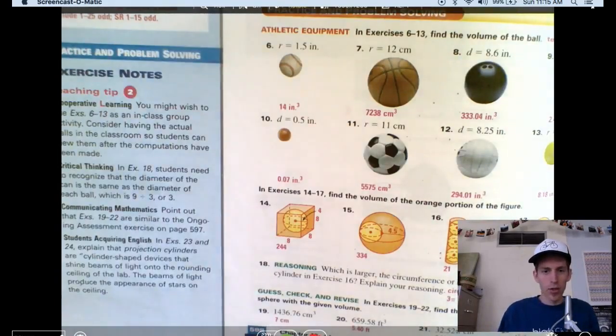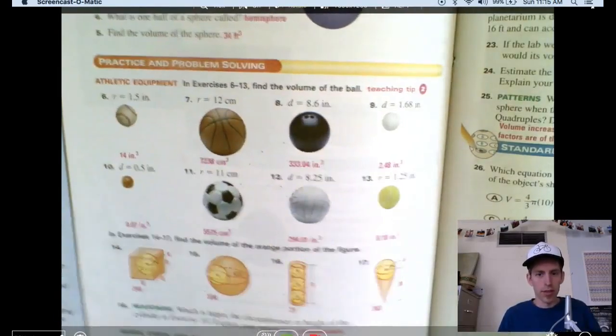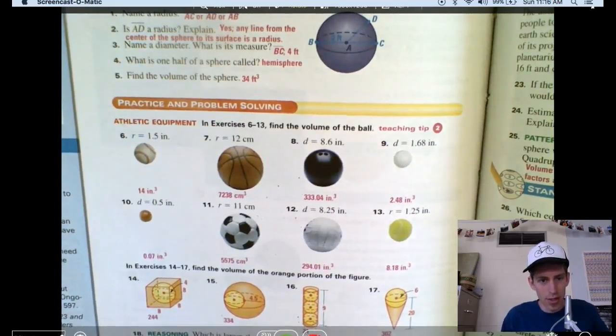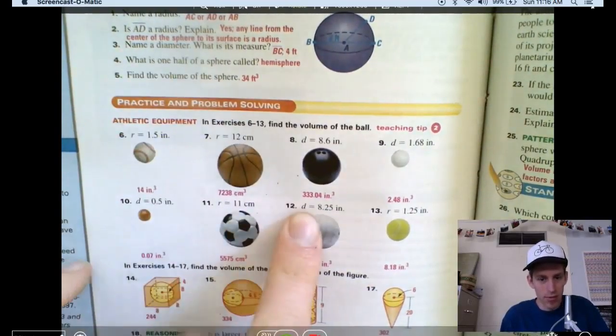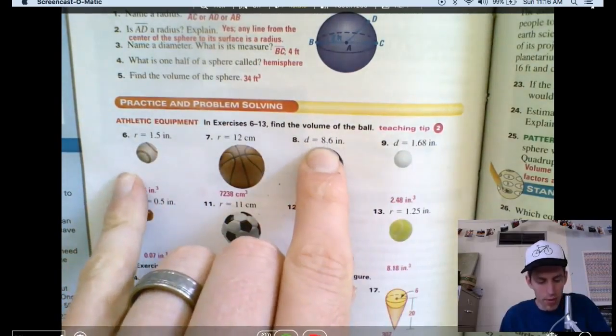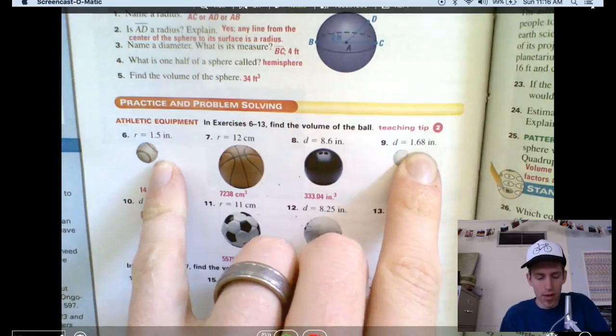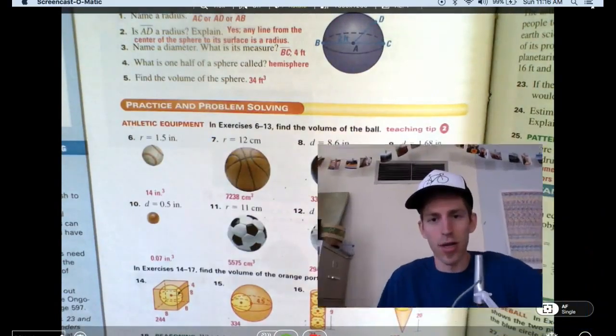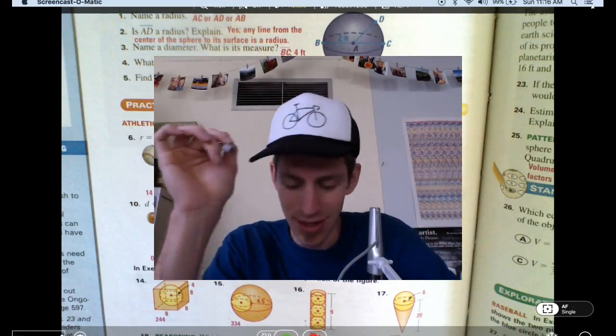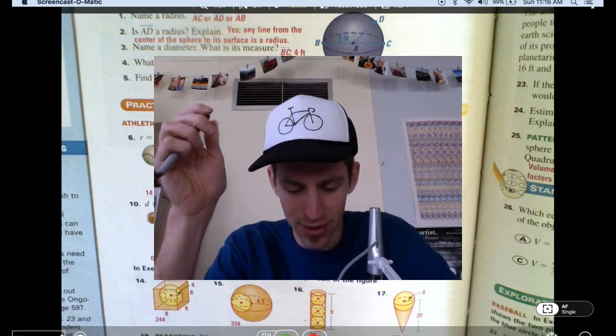Anyway, so I showed all that to you because it's interesting, and I would like you to know how to work with that formula. But actually, in this prompt, in your assignment here, you've got radius, radius, radius, or diameter, which you've got to put to radius, diameter. They are never going to, I don't believe, give you the volume and then make you find the radius. But they might later on down here, and I just showed you how to do that. So, you're welcome. Have a good day. We'll see you later.